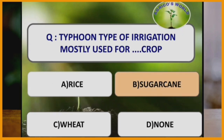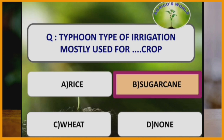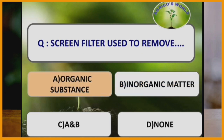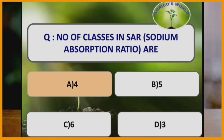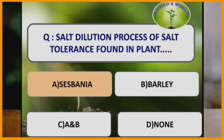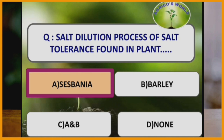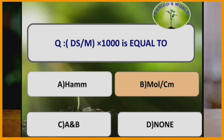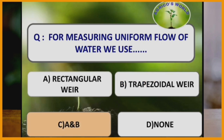Typhoon type of irrigation is mostly used for sugarcane crop. Screen filter is used to remove organic substances. Number of classes in SAR (Sodium Absorption Ratio) are 4. The salt dilution process of salt tolerance is found in Sesbania plant, which tolerates salt stress by the method of salt dilution.